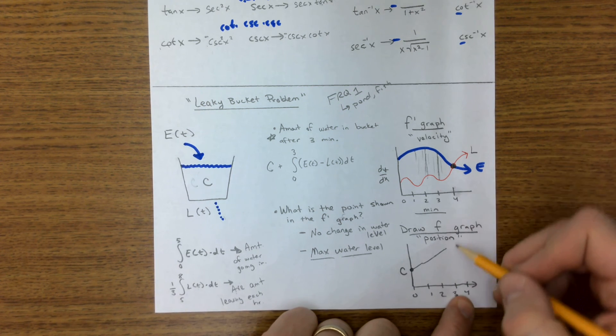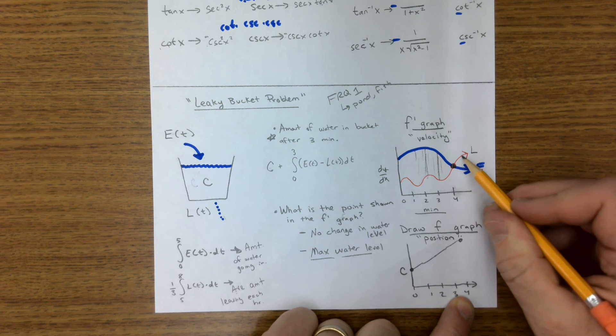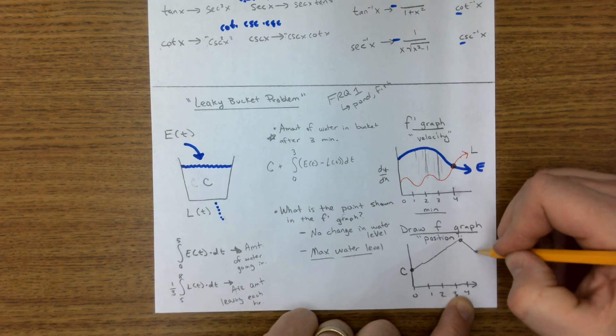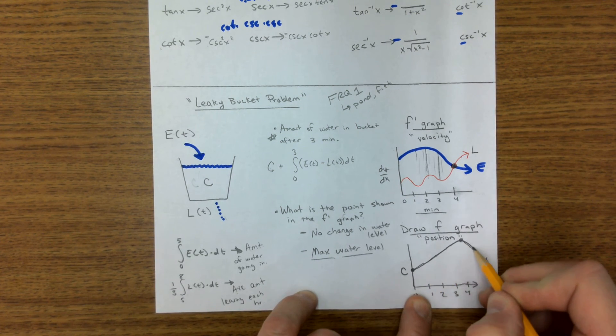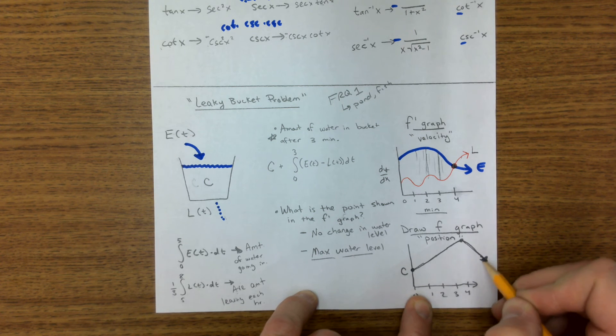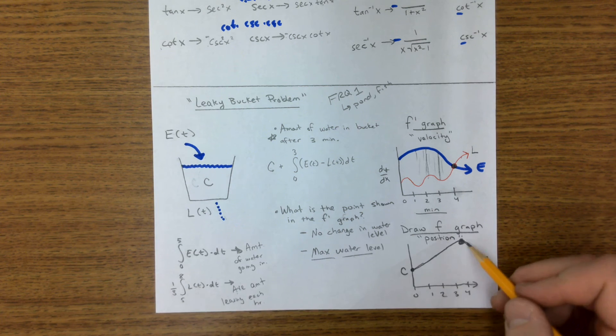But what happens right here at four minutes? Well, the graph stops. And now we have more water leaking than coming in. So the value goes down. So this graph, and it would be a curve, it would curve up and it would curve down at a maximum value right there. So at four minutes, there's a maximum value. On the position graph, it definitely looks like a maximum value.